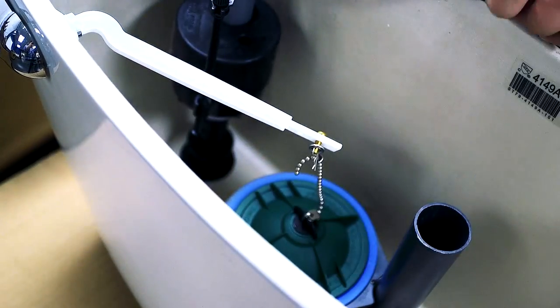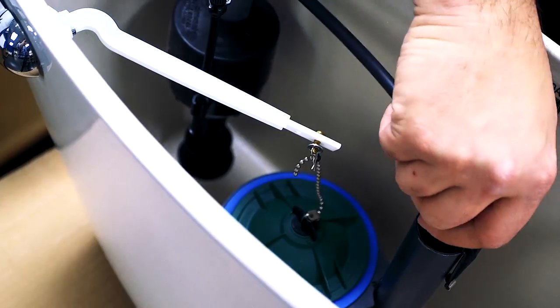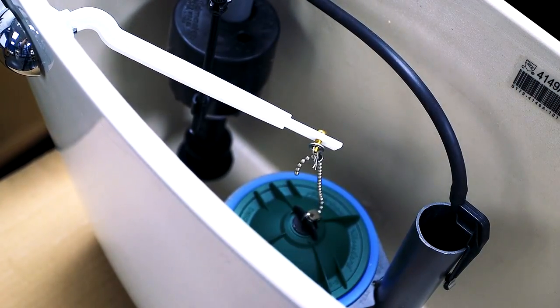Finally, push the refill clip onto the refill tube and reinstall the tank. Turn on the water and check for leaks. Just like that, your flush valve has been replaced.